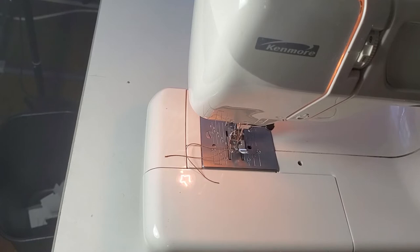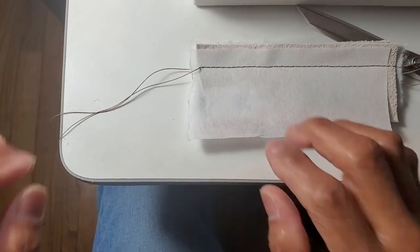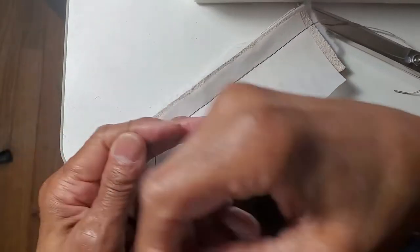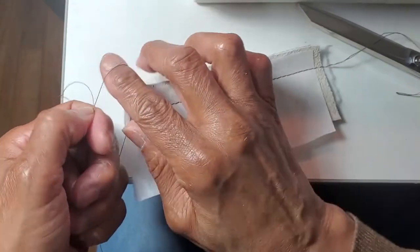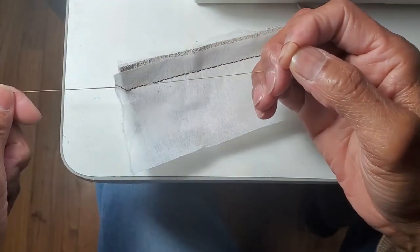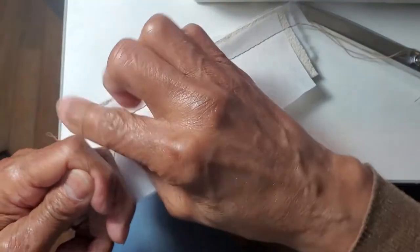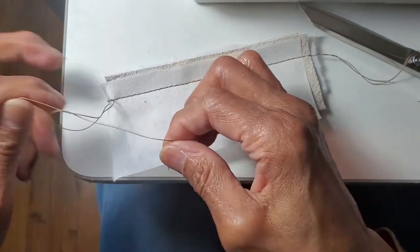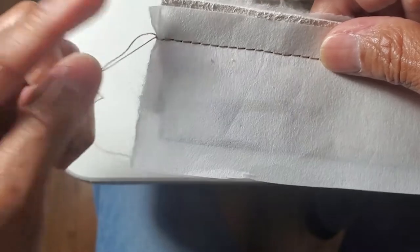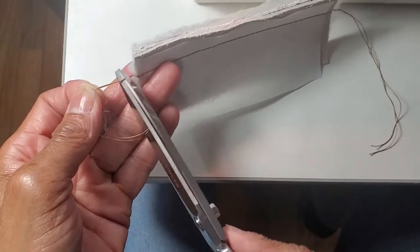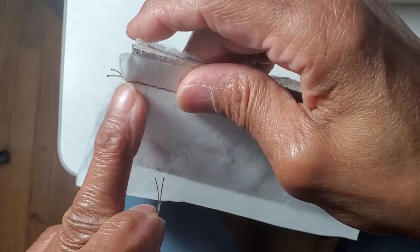Now here at the end, remember instead of backstitching what you do, you tie your thread in a knot. Then you cut it and cut it about a quarter inch from the end. Don't cut it even with the knot.